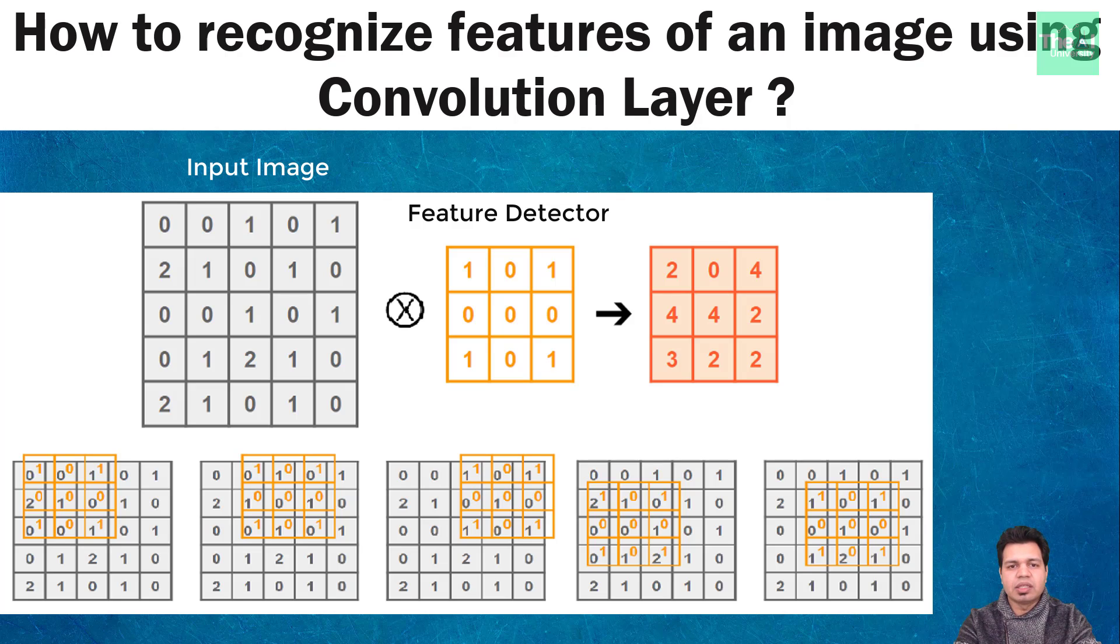So 0x1 equals 0, 0x0 equals 0, 0x1 equals 0, and 1x1 equals 1. So when we add these values we get 2 which is then placed here.